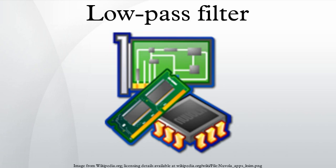The moving average operation used in fields such as finance is a particular kind of low-pass filter, and can be analyzed with the same signal processing techniques as are used for other low-pass filters. Low-pass filters provide a smoother form of a signal, removing the short-term fluctuations, and leaving the longer-term trend.